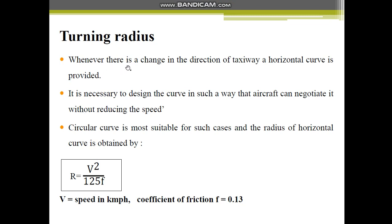So what do you mean by turning radius? Whenever there is a change in the direction of a taxiway, a horizontal curve is to be provided. It is necessary to design the curve in such a way that the aircraft can negotiate it without reducing the speed. A circular curve is more suitable in such cases, and the radius of the horizontal curve is obtained by the formula R = V²/125f, where V is the speed of the aircraft in km per hour and f is the coefficient of friction, which is usually taken as 0.13.